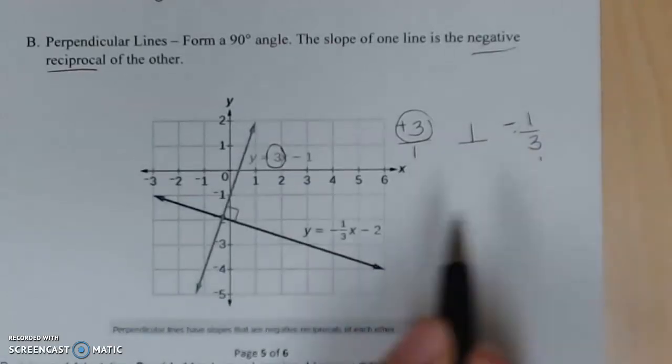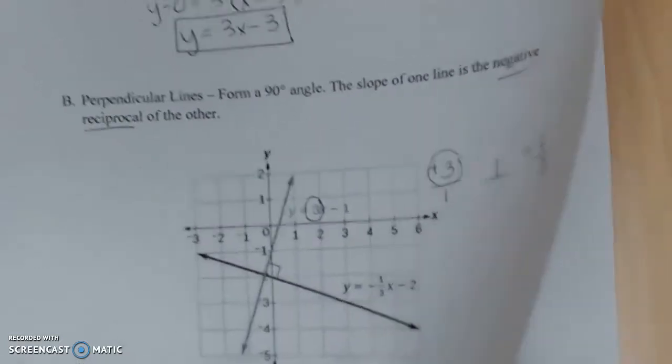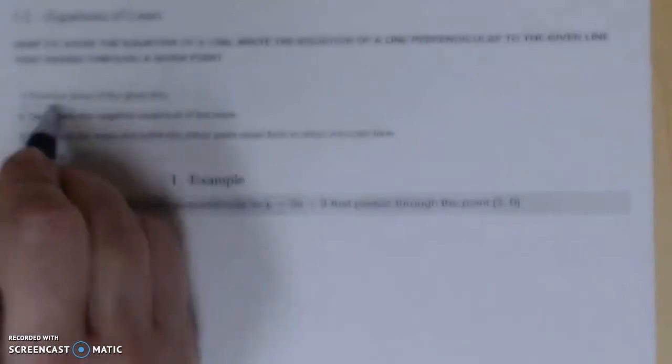So positive 3's negative reciprocal would be negative 1/3, and that will give you that perfectly perpendicular line. Let's look at an example of what we can do with that. Just like with parallel lines, we've got some steps.